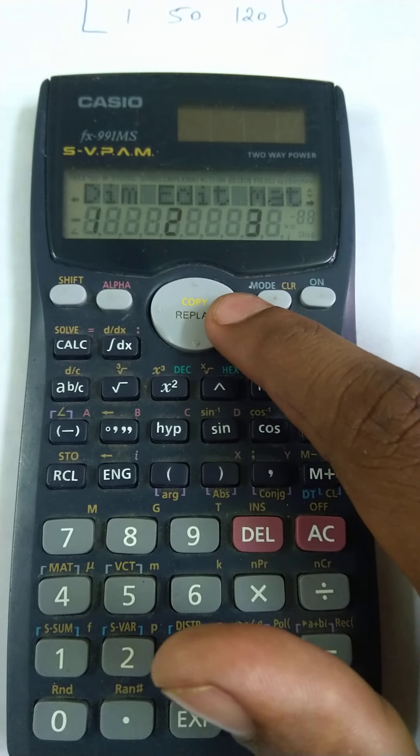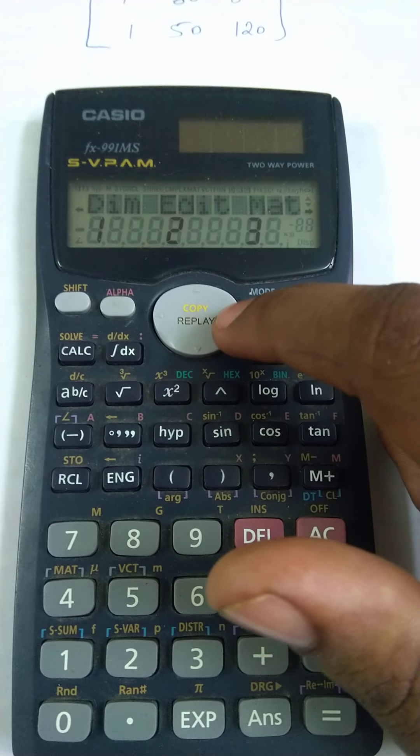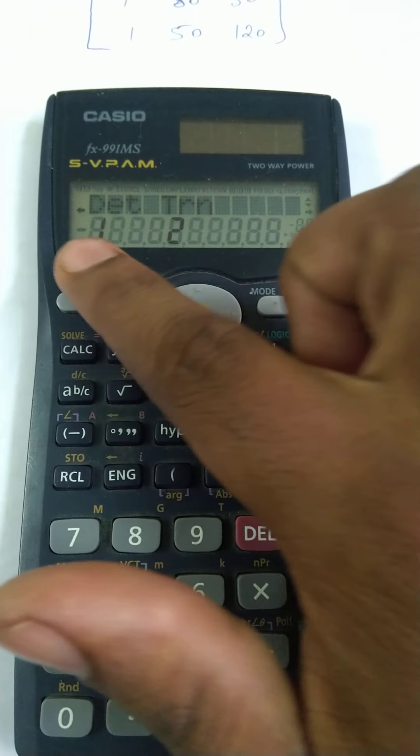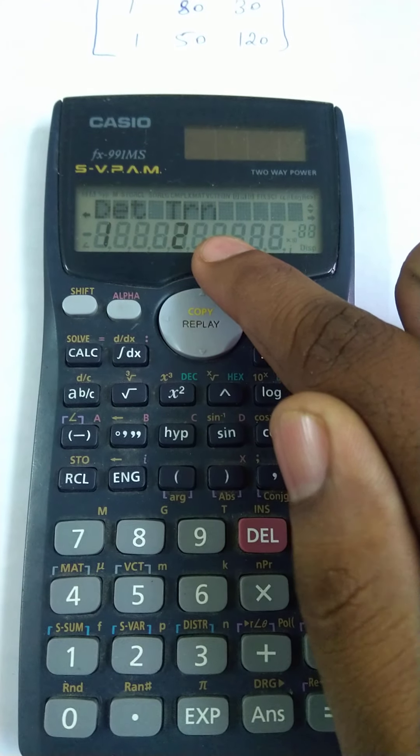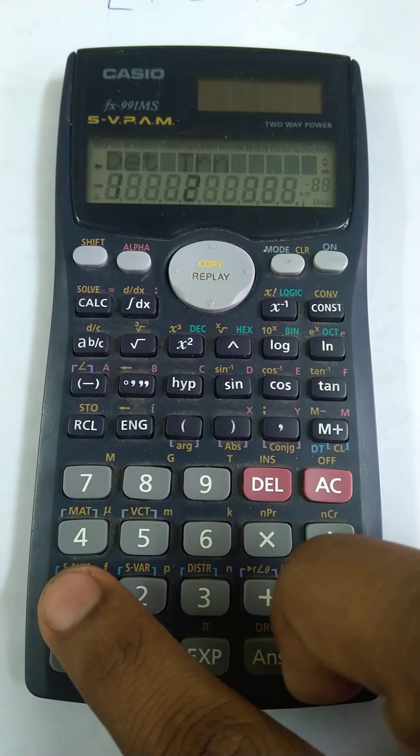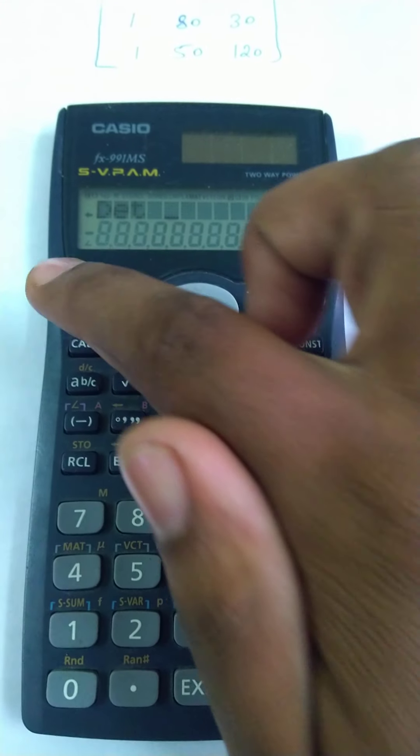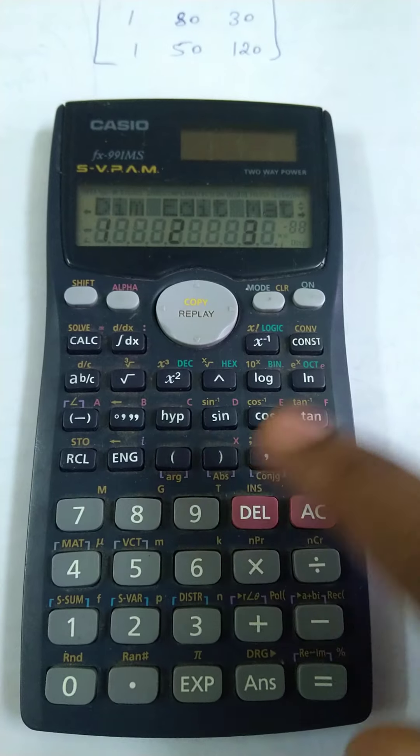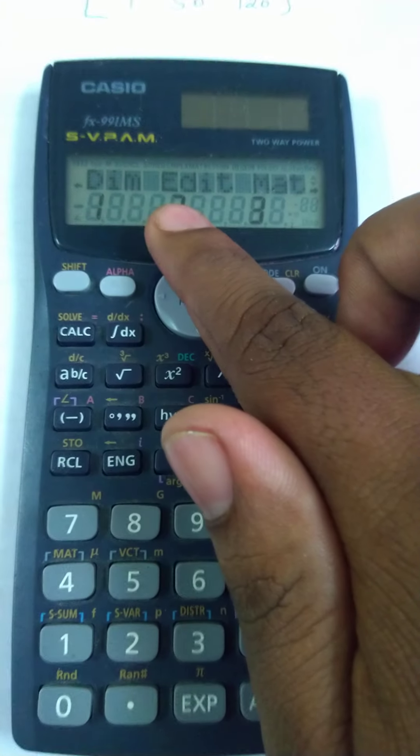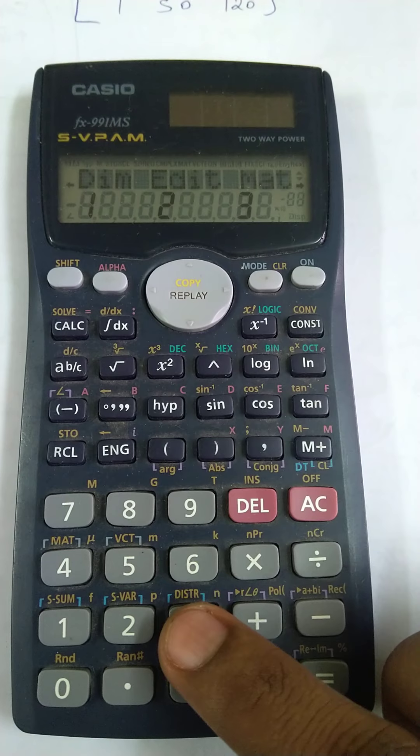Press the right side of the replay button. You'll see 1 for determinant, 2 for transpose matrix. Press 1 for determinant. Then shift 4 again, and press 3 for matrix.